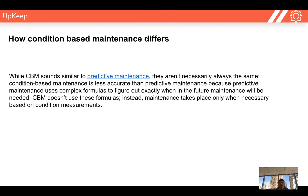Condition-based maintenance sounds very similar to predictive maintenance, but they aren't necessarily always the same. Predictive maintenance uses data and generates models to predict equipment failure, whereas condition-based maintenance uses benchmarks to tell us when we need to perform maintenance next — and it's outside of just a time-based interval.